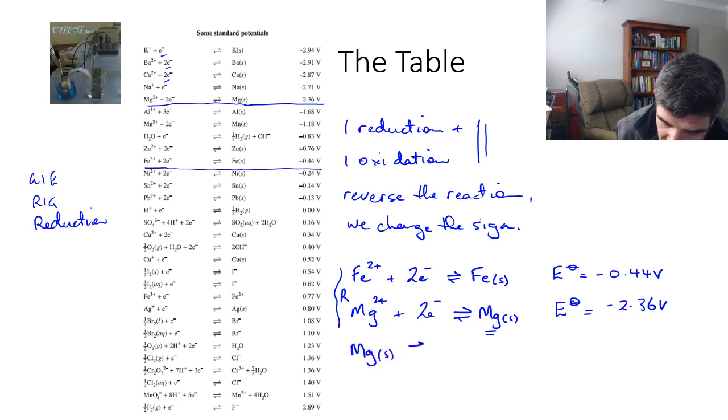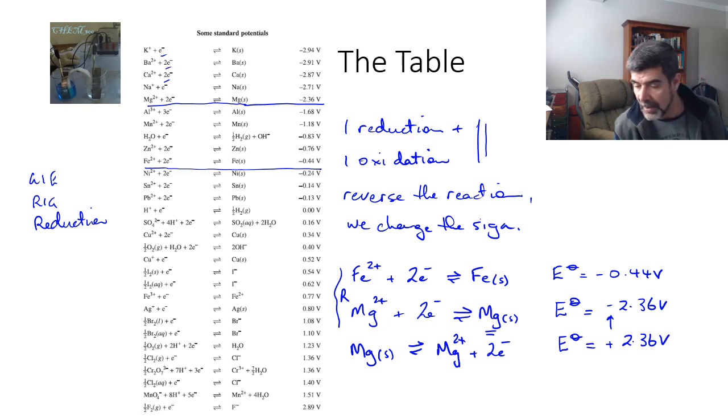Mg(s) → Mg²⁺ + 2e⁻. What I have to do with the E° value is change the sign, so it becomes +2.36 volts. I'm now in a position where I don't want this one anymore. I just want the first one and now the third one.